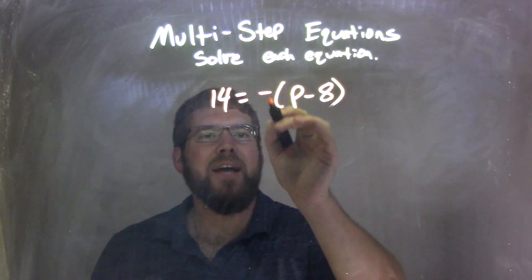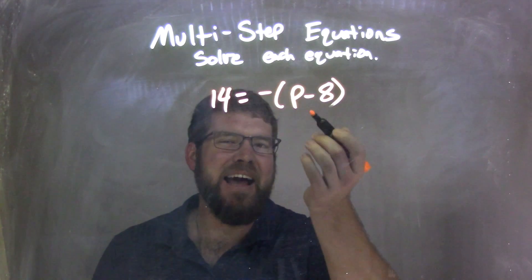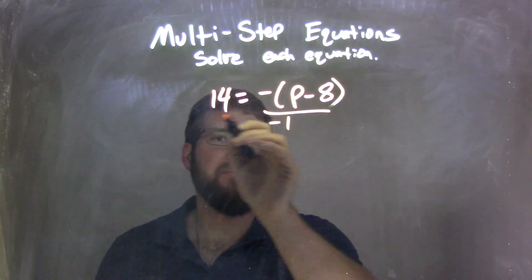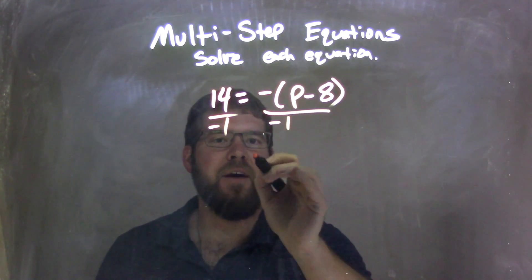Well, I want to get rid of that negative sign on the outside. It's really a negative 1 times p minus 8, so I'm going to divide by negative 1 to both sides.